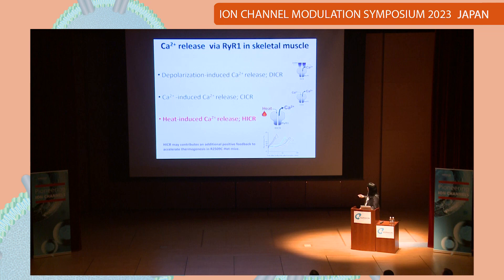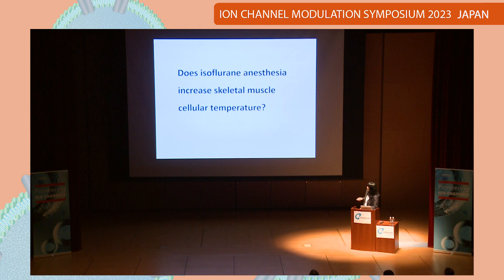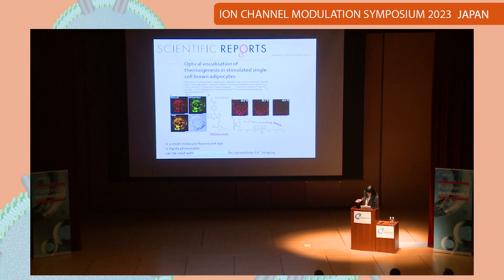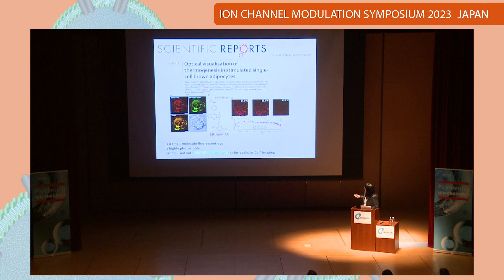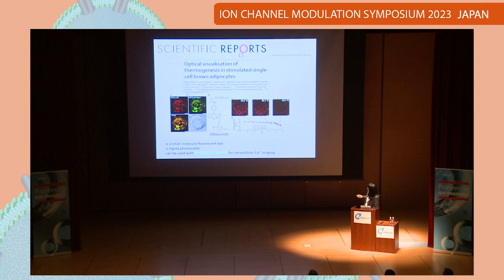We found heat-induced calcium release, HICR. We thought HICR may contribute an additional positive feedback to accelerate thermogenesis in heterozygous mice during an MH episode. We wanted to know: does isoflurane anesthesia increase the muscle cellular temperature? We searched for a method to measure cellular temperature and used ERSAM dye — developed by a group at Canada University — a small molecule fluorescent dye that is highly photostable. Excitation wavelength is 560 nanometers, so we can use it simultaneously with a calcium indicator. ERSAM fluorescence intensity is inversely correlated with cellular temperature.